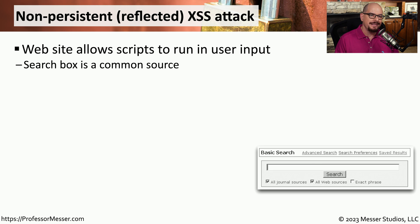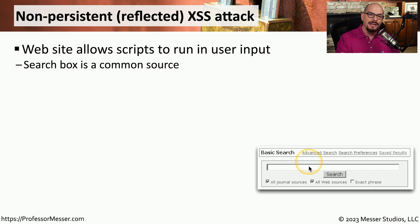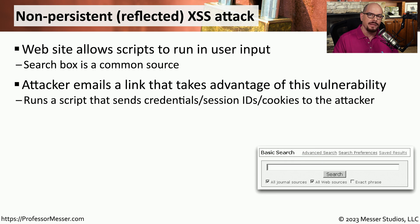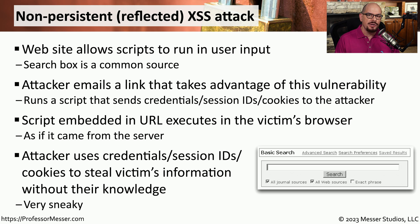One common type is a non-persistent attack, also called a reflected attack. A third-party website may be configured to allow people to run scripts inside user input fields. A site with a search engine, for example, should not allow someone to run their own JavaScript in that input box. The attacker emails a link exploiting that vulnerability, the script sends private details to the attacker, and the victim unknowingly executes that malicious code. The third-party website may then send session ID information to the attacker, giving them the same access as the victim.